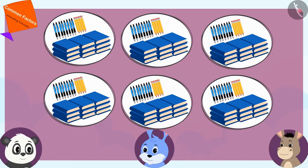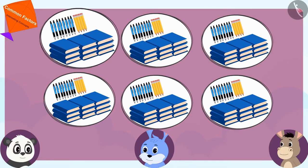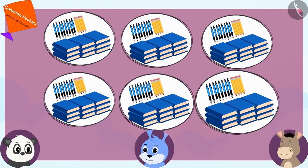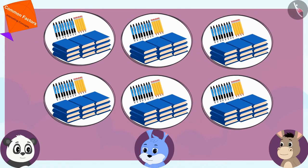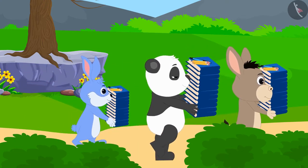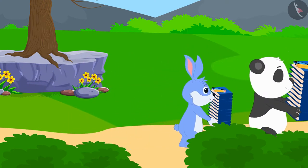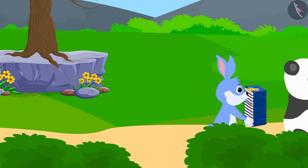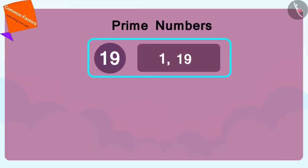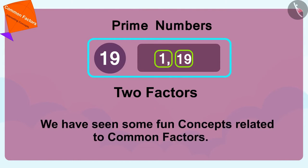In this way, Golu, Bunny, and Bola formed 6 groups of all those items and excitedly went out to deliver them to the needy children of the village. Children, in this video we have seen some fun concepts related to common factors.